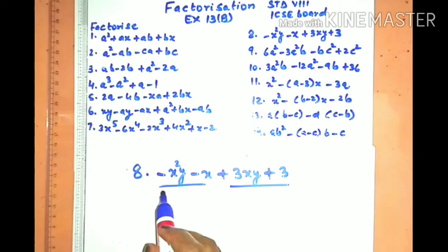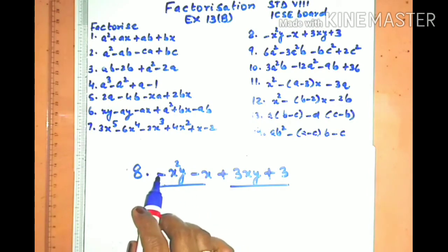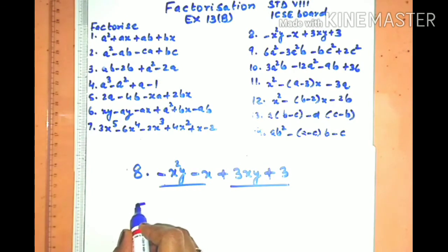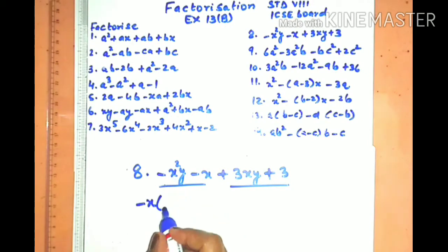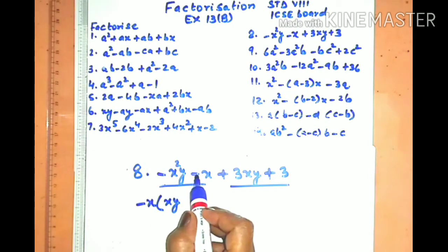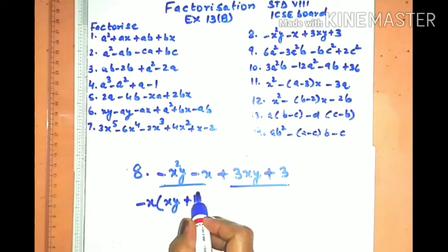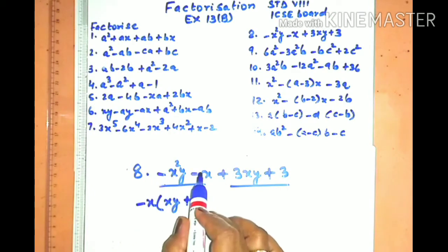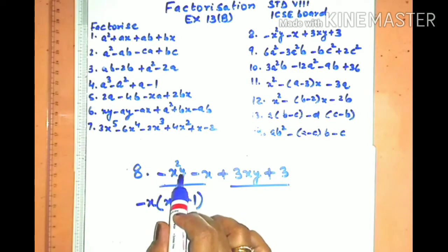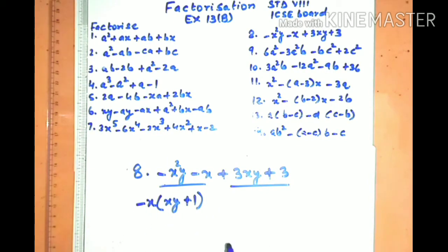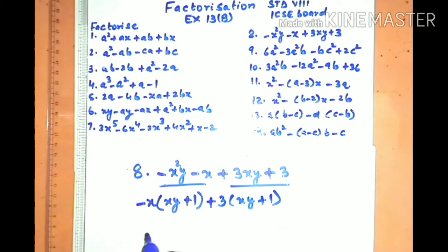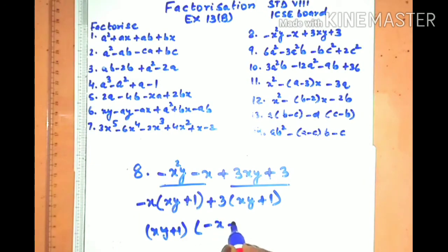Sum number eight has four terms. In the first pair, both terms have a minus sign and x in common, so we take out minus x as common; what remains is (x + y) — wait, (1 and x and y). In the second pair, both have minus, so when the minus sign goes out, the sign inside becomes plus, giving (x + 1) in the bracket. Now (x + y + 1) — (xy + 1) is the common factor, and the remaining bracket is (−x + 3).